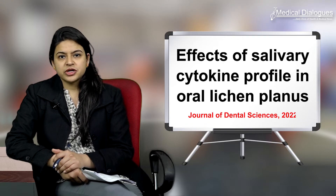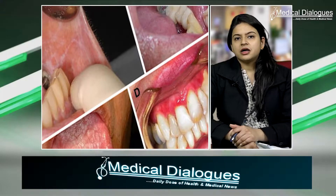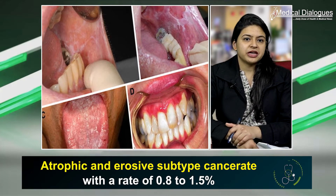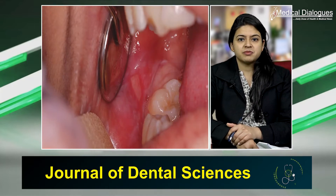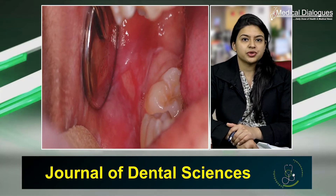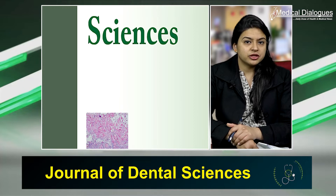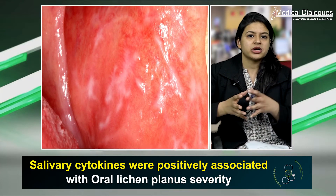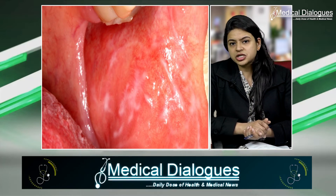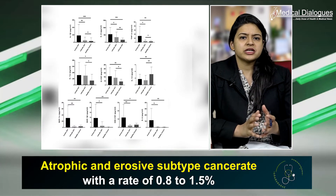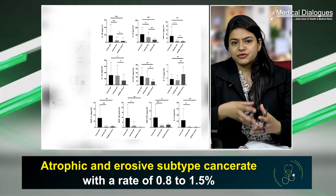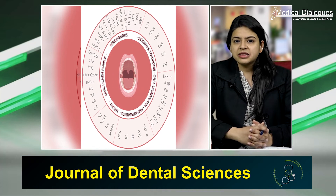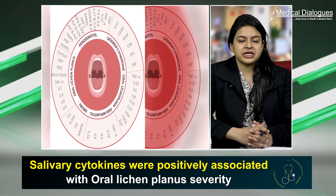Today we discuss the effects of salivary cytokine profile in oral lichen planus. According to the WHO, the atrophic and erosive subtypes can progress with a malignant transformation rate of 0.8 to 1.5 percent, making it a potential malignant disorder of the oral cavity. The Journal of Dental Sciences reports a study aimed to comprehensively detect the salivary cytokine profile of patients with this condition. Certain salivary cytokines were positively associated with oral lichen planus severity, and therefore might have potential as biomarkers in the diagnosis and prognosis of oral lichen planus.